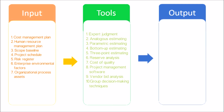Parametric estimating uses a statistical relationship between relevant historical data and other variables to calculate a cost estimate for project work. Bottom-up estimating is a method of estimating a component of work. Three-point estimating. Reserve analysis: cost estimates may include contingency reserves to account for cost uncertainty. Cost of quality: assumptions about costs of quality may be used to prepare the activity cost estimate.